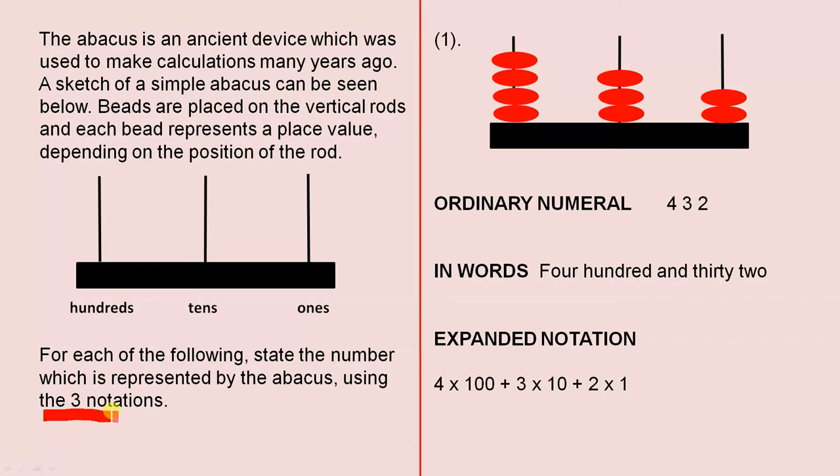So they're the three notations that we used earlier. The ordinary numeral is 432, because you've got four beads, three beads, two beads, so 432. In words, 432, because remember you've got hundreds, tens and ones. In expanded notation, four times a hundred, plus three times ten, plus two times one.